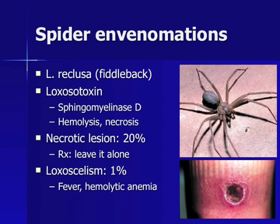As with most environmental emergencies, mortality is highest at the extremes of age. The Loxosceles reclusa spider, or brown recluse, can deliver a toxin which contains sphingomyelinase D, a potent hemolytic and cytotoxic agent. 20% of bites from the brown recluse will cause a necrotic lesion with a black central eschar. This eschar resembles cutaneous anthrax and each has been mistaken for the other in several case reports. Treatment for the necrotic lesion is purely supportive care; incision and drainage and antibiotics have only worsened outcomes.